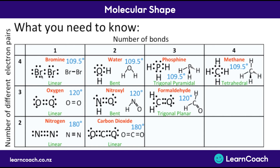So we've covered a lot of names: linear, bent, trigonal pyramidal (a triangle pyramid), trigonal planar (a flat triangle), and tetrahedral (a triangle pyramid with a stem on top). These are the different shapes you'll need to know. For excellence or higher marks, remember: four electron pairs means 109.5 degrees apart, three electron pairs means 120 degrees apart, and two electron pairs means they're straight at 180 degrees apart.